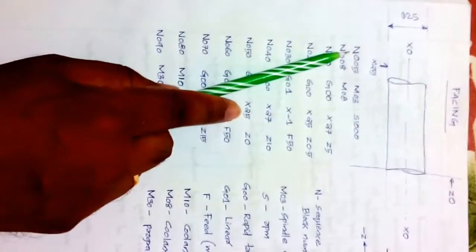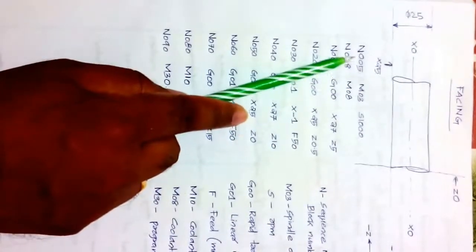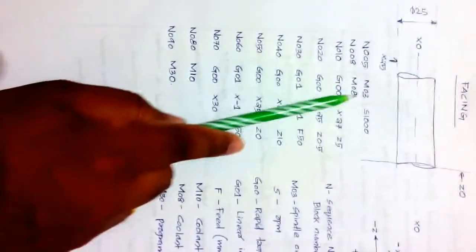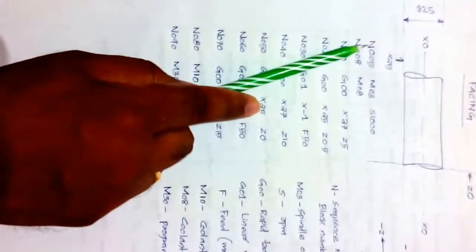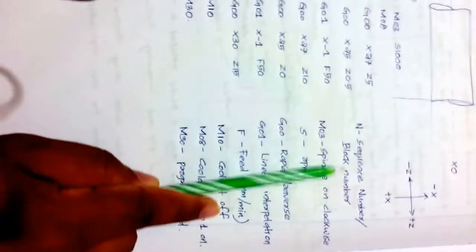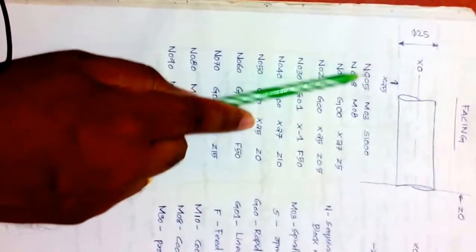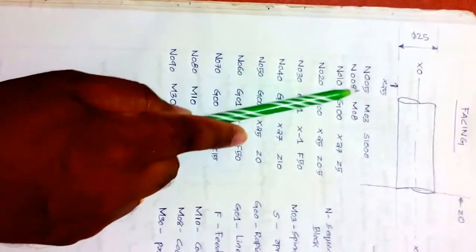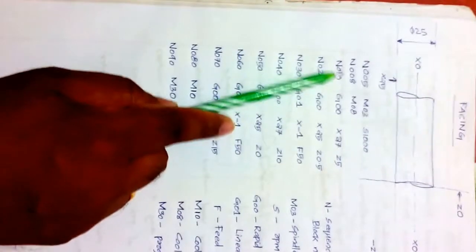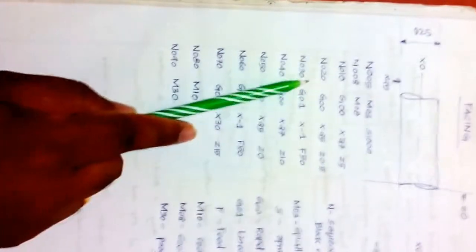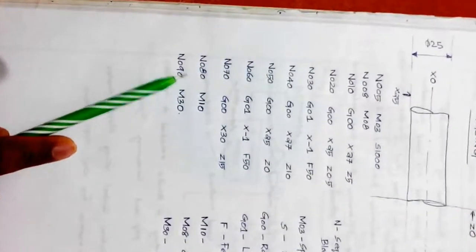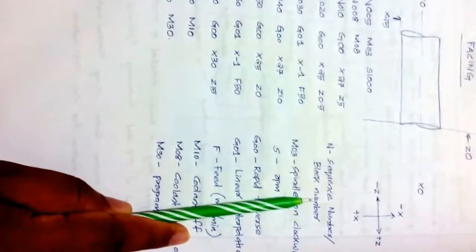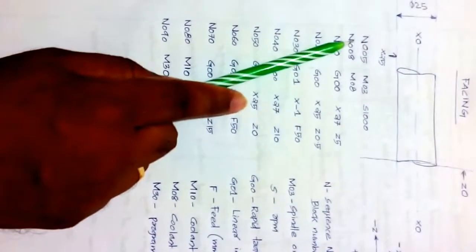This is the CNC program. Each line is called a block, and each block is identified by an N-word, which is called the sequence number or block number. Block one is identified by N005, block two by N008, block three by N010, and so on: 20, 30, 40, 50, 60, 70, 80, 90. The N-word is used to identify each block.